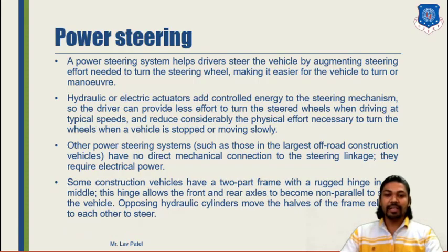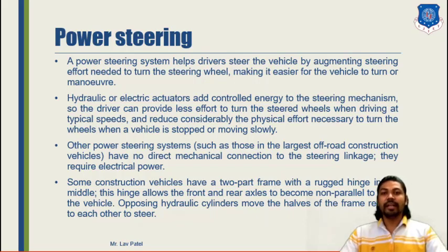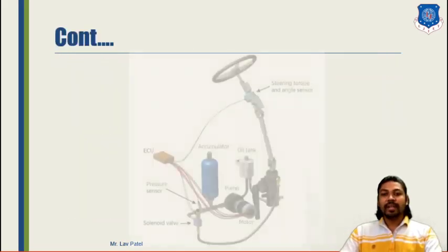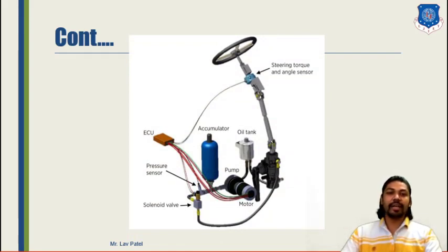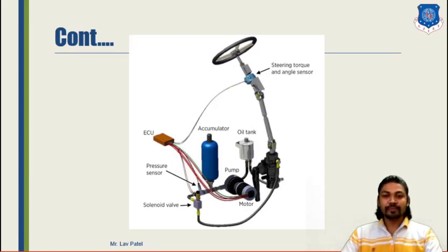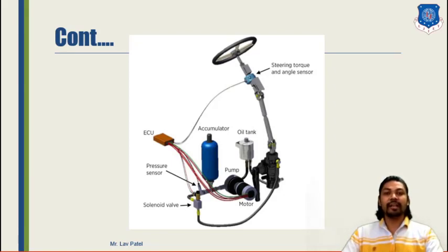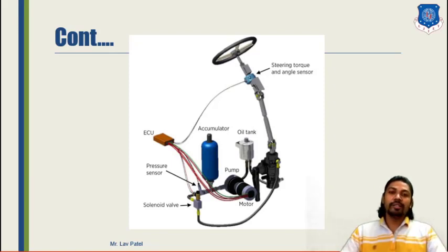Construction vehicles have a two-part frame with a rugged hinge in the middle. These hinges allow the front and rear axles to become non-parallel to steer the vehicle, with opposing hydraulic cylinders moving the two halves of the frame relative to each other. In the power steering diagram, a torque and angle sensor transmits data to the ECU; a motor assists the driver; an oil tank provides continuous oil supply; and actuators, pressure sensors, and solenoid valves are included. This complete power steering system can be used in any vehicle, whether a car or a special purpose vehicle.